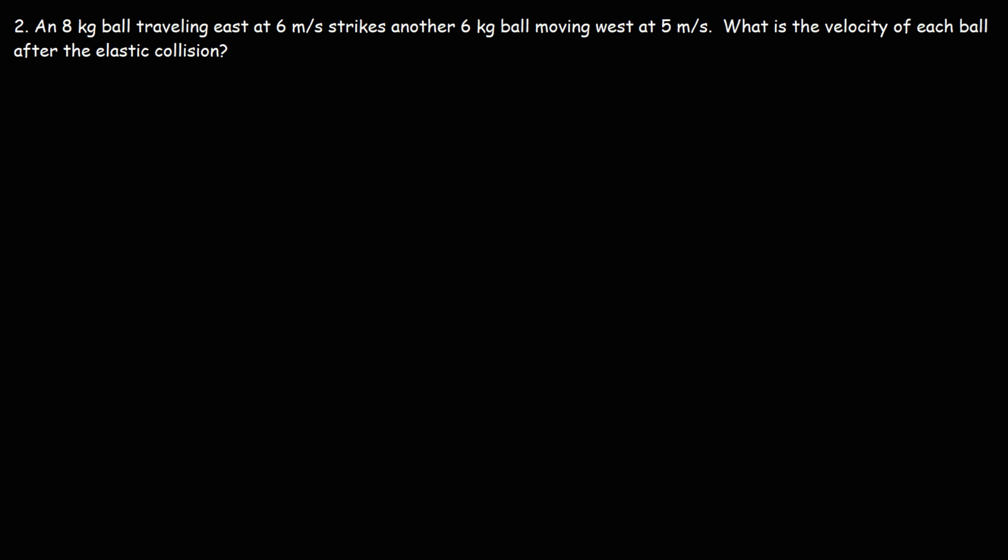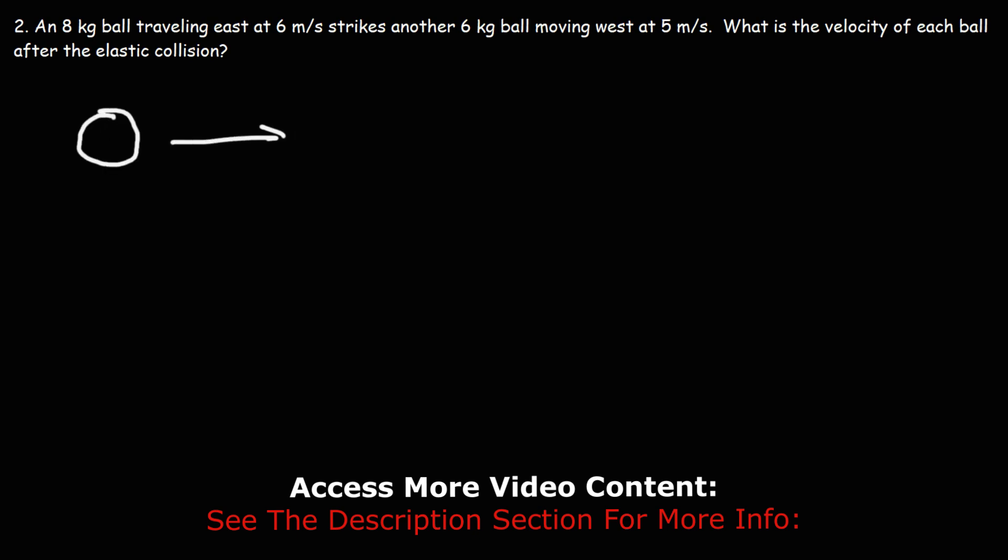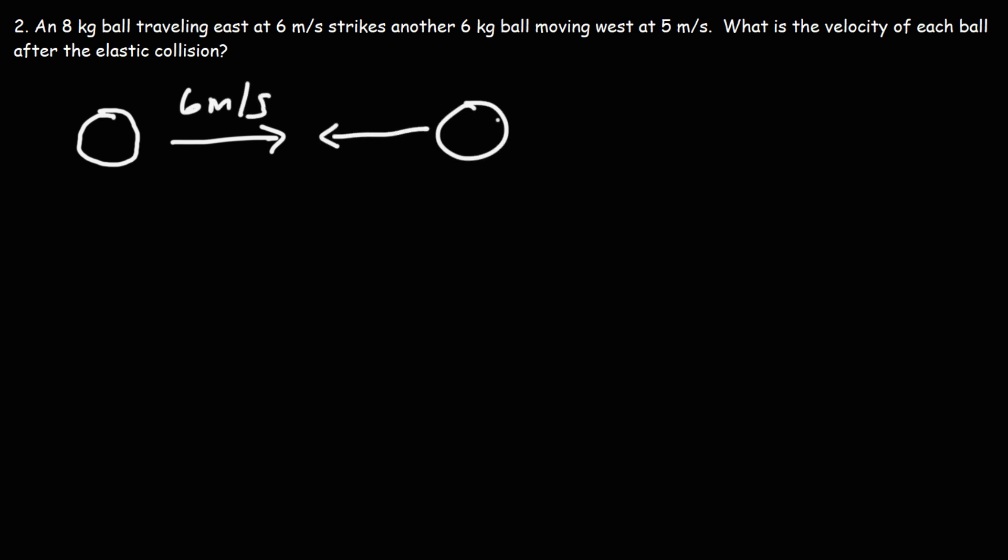So we have an 8-kilogram ball traveling east at 6 meters per second, and it strikes another 6-kilogram ball moving west at 5 meters per second. So let's draw a picture. So here's the first ball. It's moving east at 6 meters per second. And then we have another ball that's moving west at 5 meters per second. So this is a head-on collision.